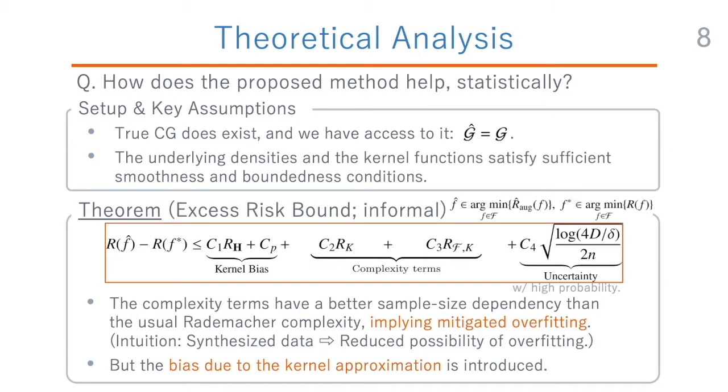From theoretical perspectives, we investigate the question how does the proposed method help statistically? We derived an excess risk bound under a key assumption that we know the correct underlying causal graph, as well as some more technical smoothness and boundedness assumptions. The bound has three parts, namely the bias term, the complexity term, and the uncertainty term.